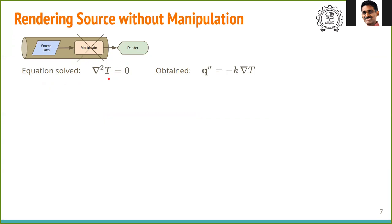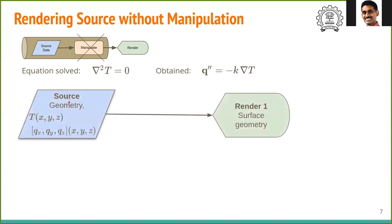The solution of this equation results in a temperature profile throughout the domain. We can also obtain the heat flux by taking the gradient of temperature. Therefore, our source data contains the temperature which is a scalar and the heat flux which is a vector.